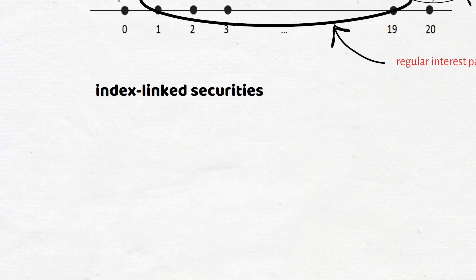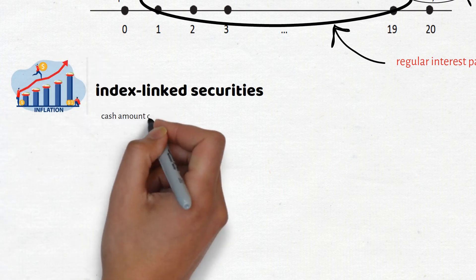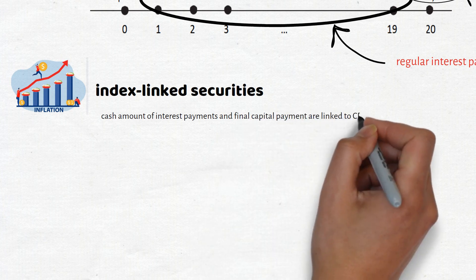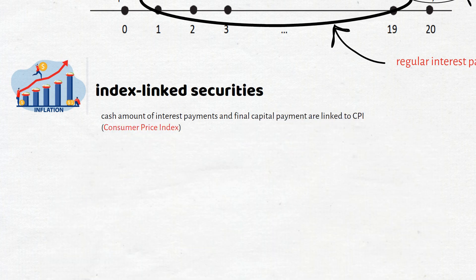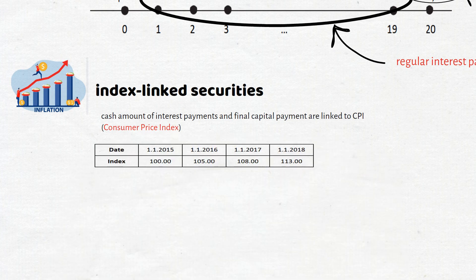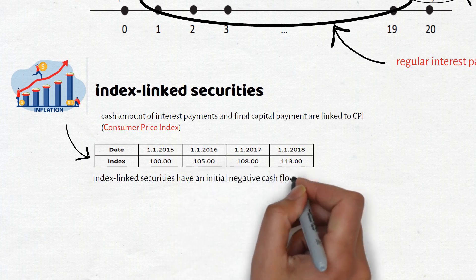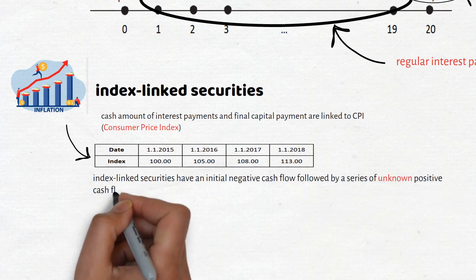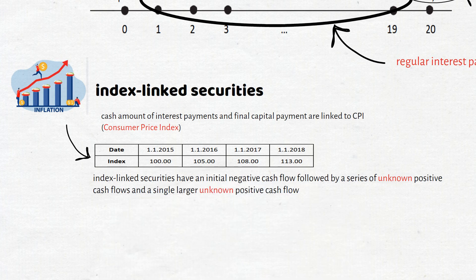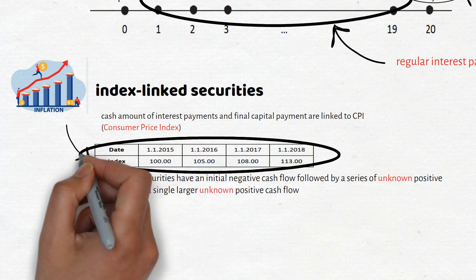Index linked securities are different from fixed interest securities because the actual cash amount of interest payments and their final capital payment are linked to an index that reflects the impact of inflation. Unlike fixed interest securities, index linked securities have an initial negative cash flow followed by a series of unknown positive cash flows and a single larger unknown positive cash flow on specified dates. Although the exact amounts of future cash flows are not known, they will be adjusted for inflation, so these cash flows are referred to as known in real terms.